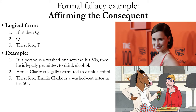Now we're going to give an example of a formal fallacy called affirming the consequent. It has the following logical form: if P then Q; Q; therefore P. It looks very similar to the valid argument modus ponens — but modus ponens is: if P then Q; P; therefore Q. Affirming the consequent reverses the order. The other premise affirms the consequent of the conditional, the 'then' clause, instead of affirming the antecedent, the 'if' clause. Modus ponens, affirming the antecedent, is valid. Affirming the consequent is invalid.